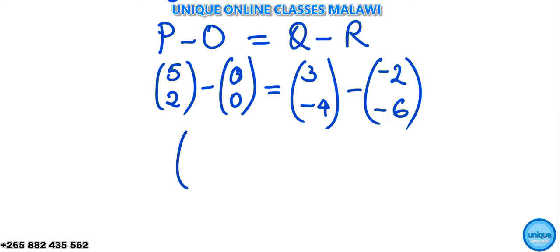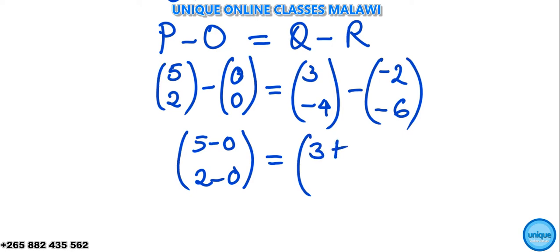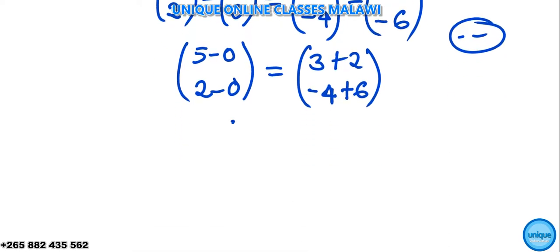Removing the brackets, we have 5 minus 0, 2 minus 0, is equal to 3 minus minus, that's positive 2. And negative 4 minus minus, that's positive 6.